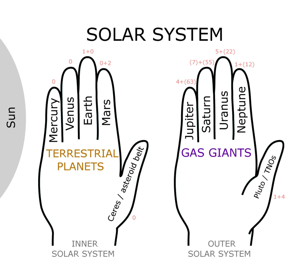One simple visual mnemonic is to hold out both hands side by side with fingers spread and thumbs in the same direction, with the fingers of one hand representing the terrestrial planets, and the other hand the gas giants.